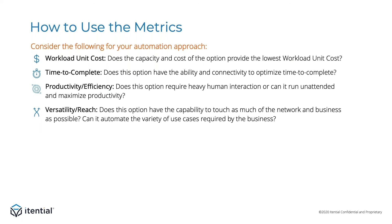As we get towards the end of the session, I'd like to talk about how teams can use these metrics. First, they can use them as an evaluation tool. For workload unit cost, they can ask which solution will have the capacity and total cost of ownership to provide the lowest workload unit cost. For time to complete, which solution has the ability to automate as much of the process as possible and eliminate idle time. For productivity and efficiency, which solution requires the least human interaction for activities that could be performed by automations, such as accessing an inventory database or checking with the network. And for versatility and reach, which solution is best aligned with the priorities and requirements of each company's environment and use case.